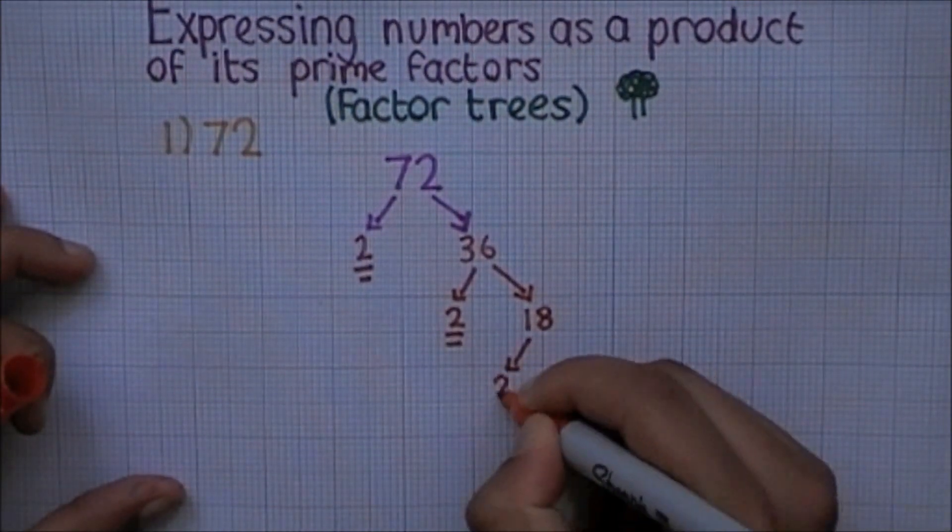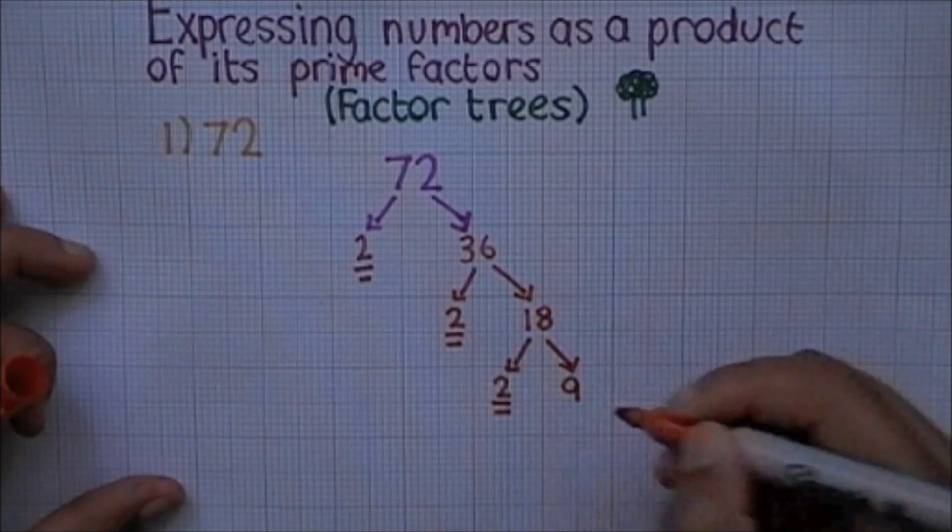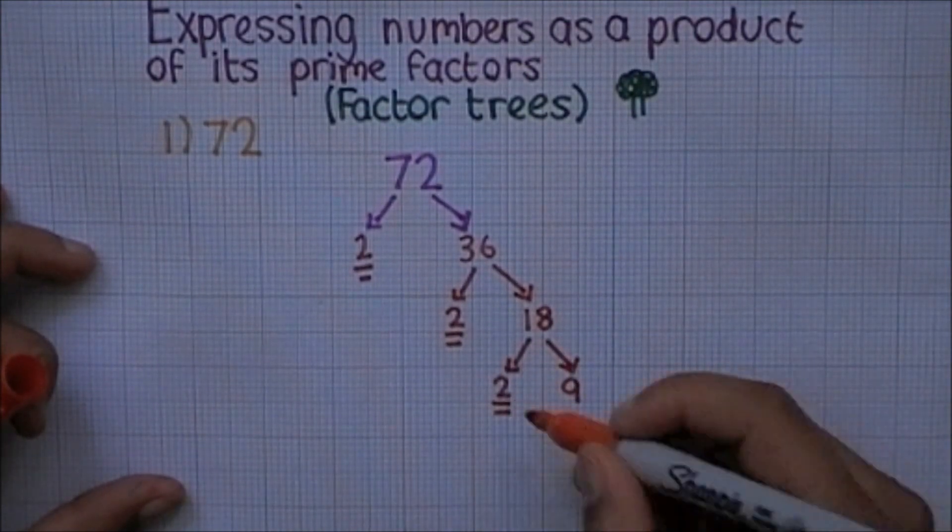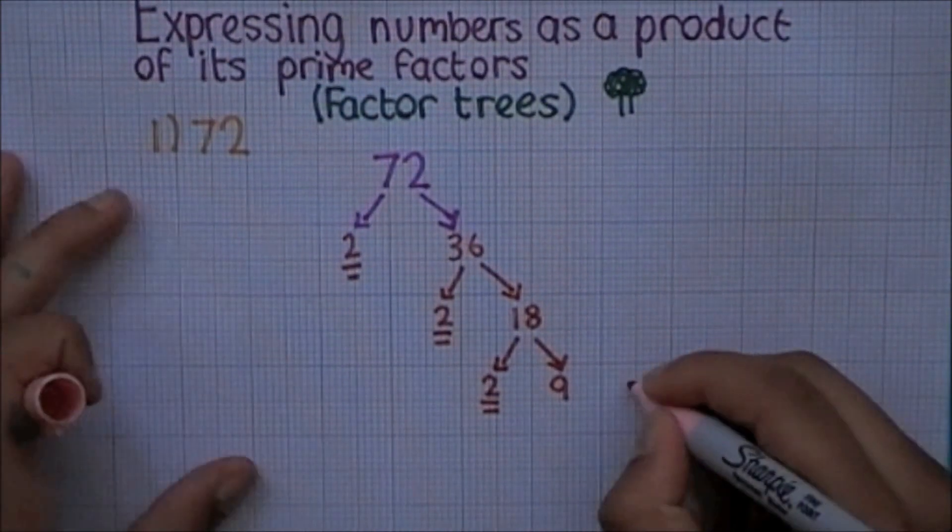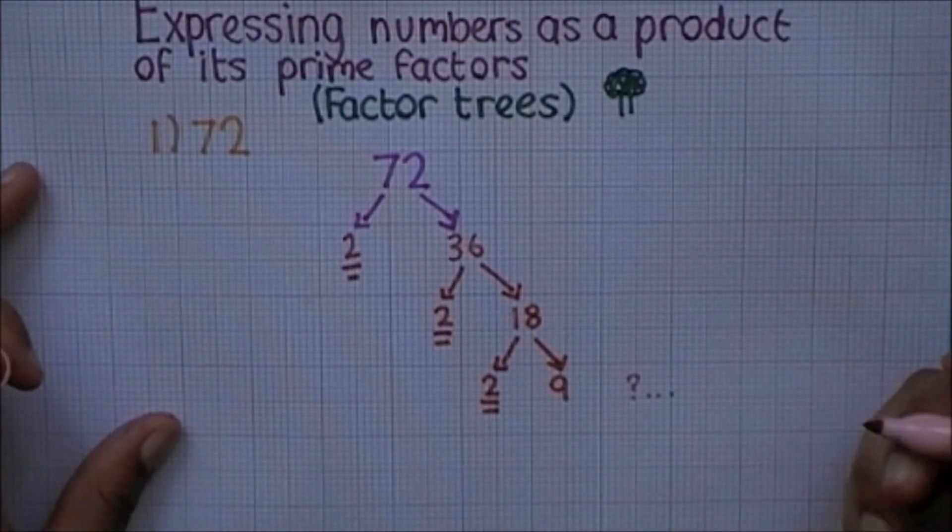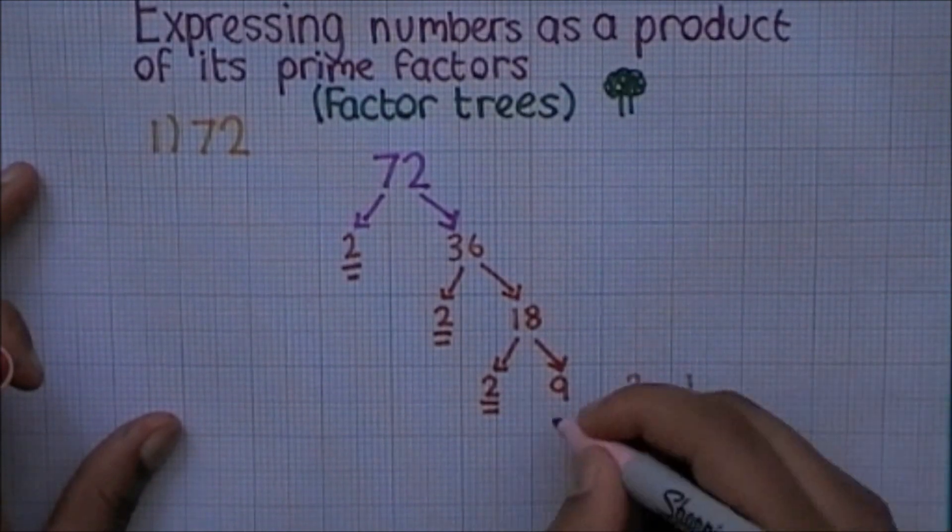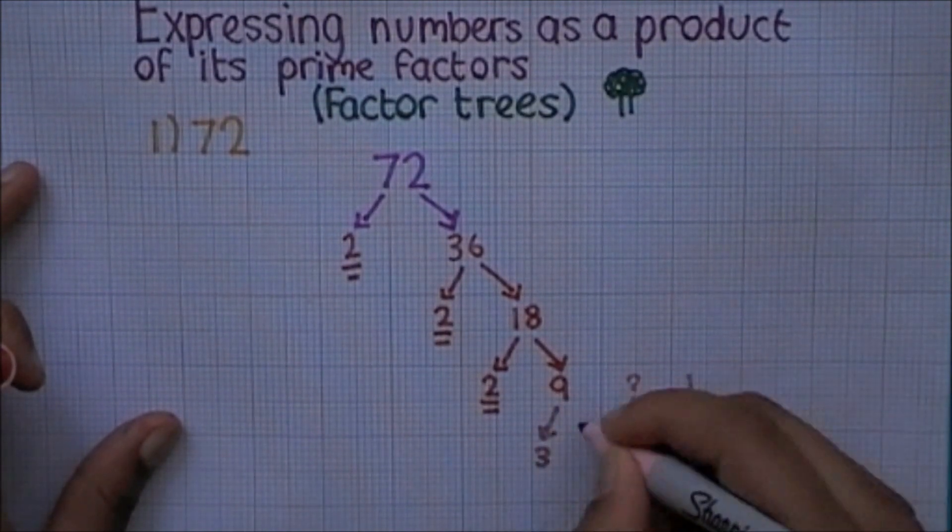Doing the same with 18, because that isn't a prime number yet. So we can split that up into 2 and 9. And we've found another prime which we can underline because we'll need it later. And now we have 9, which still isn't a prime, so let's split this one up. 2 and... wait, that won't give us a whole number, so we'll have to try a higher number.